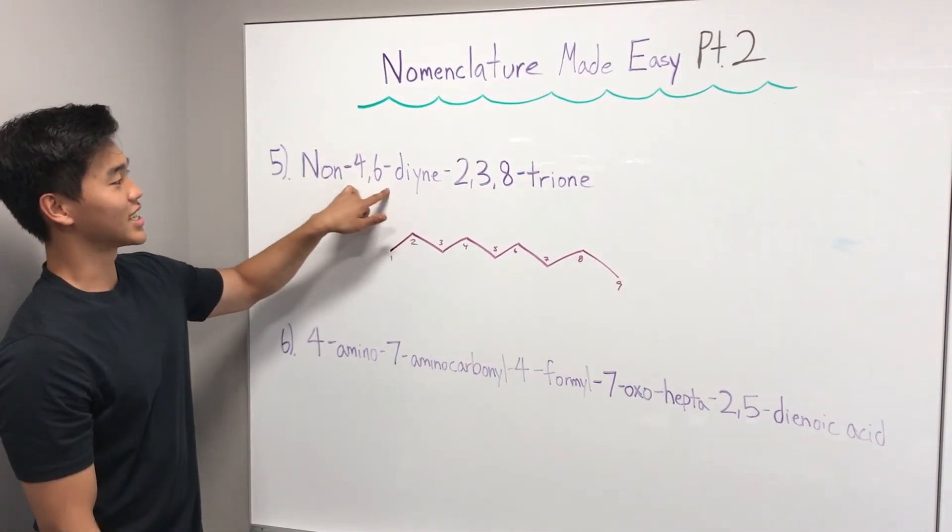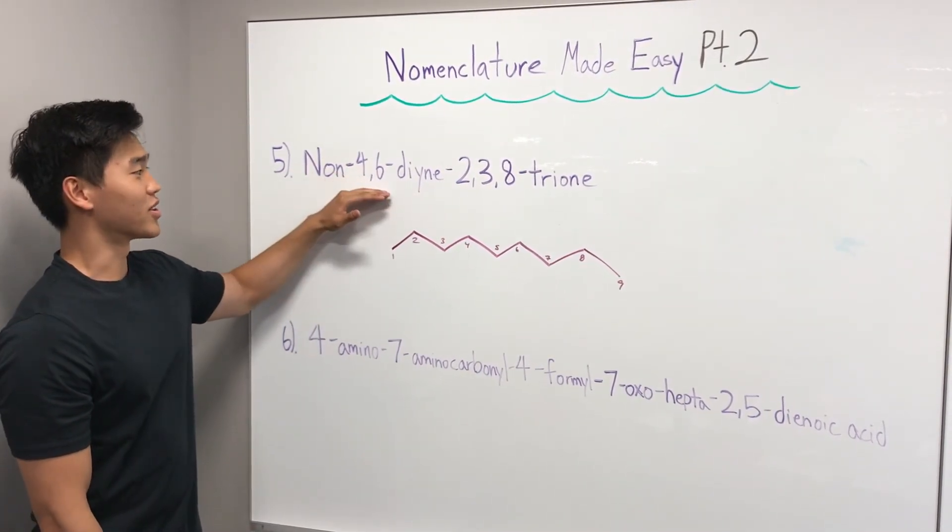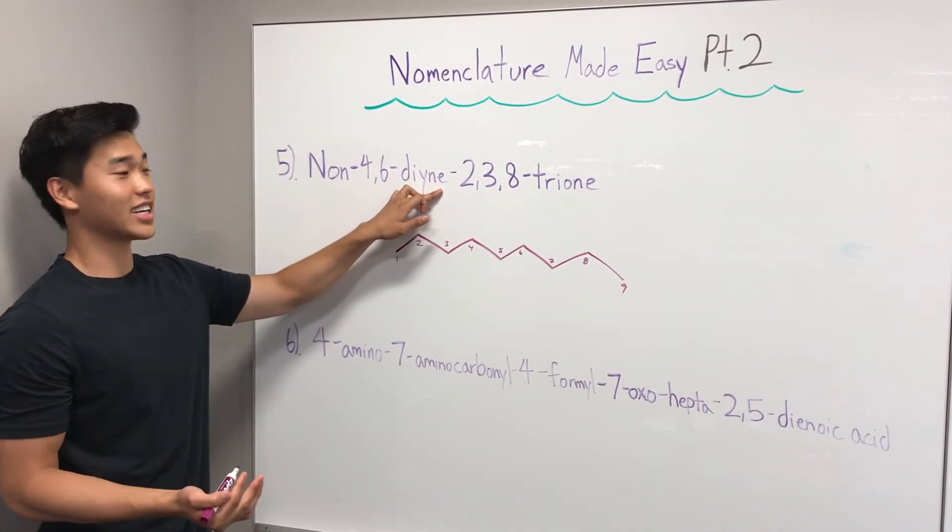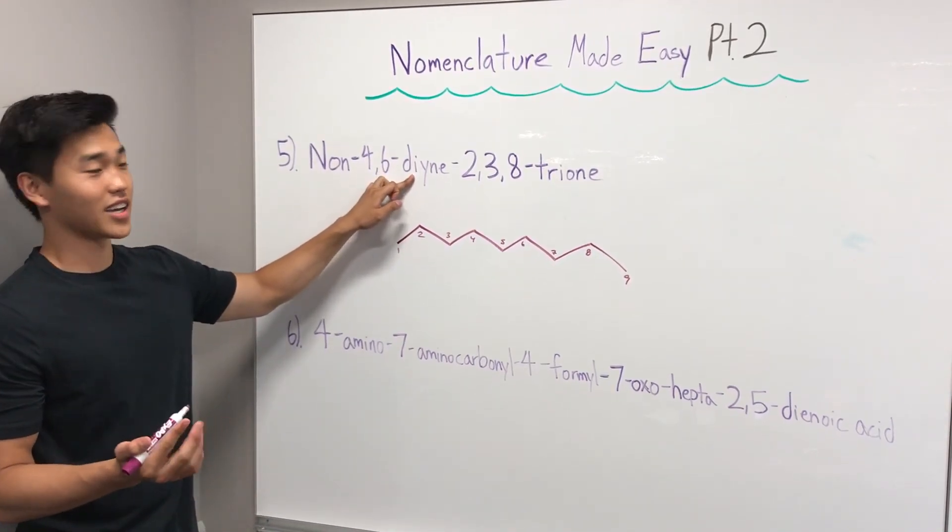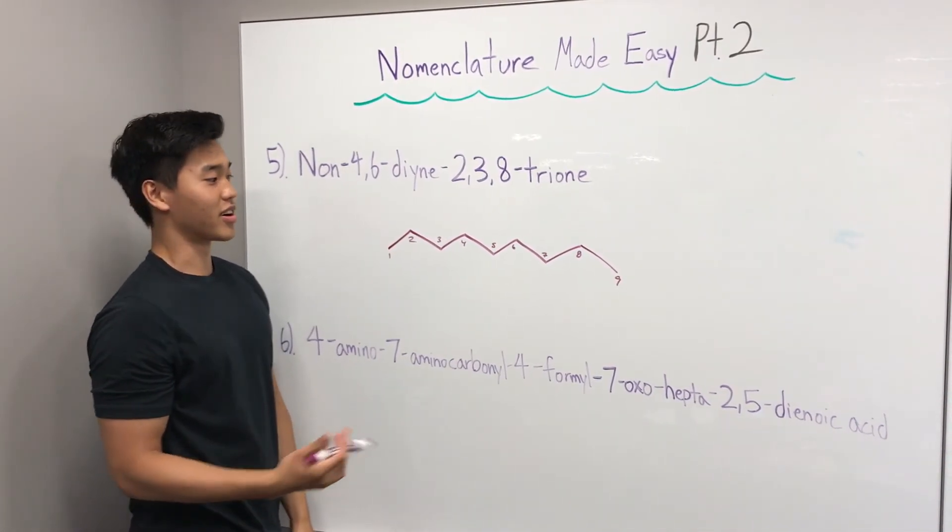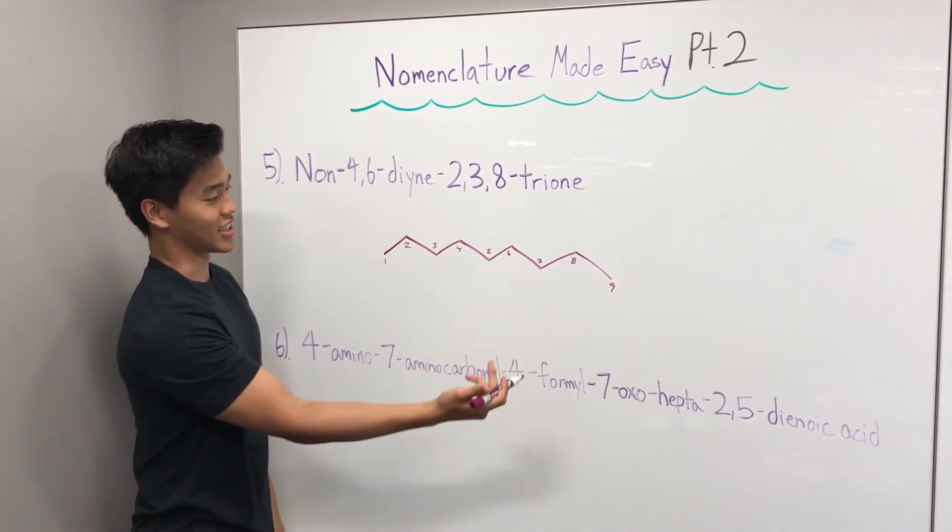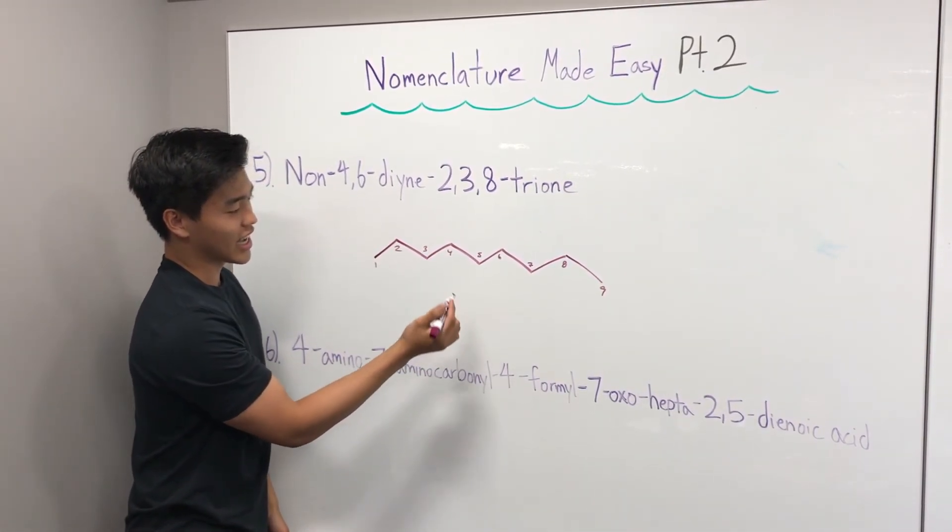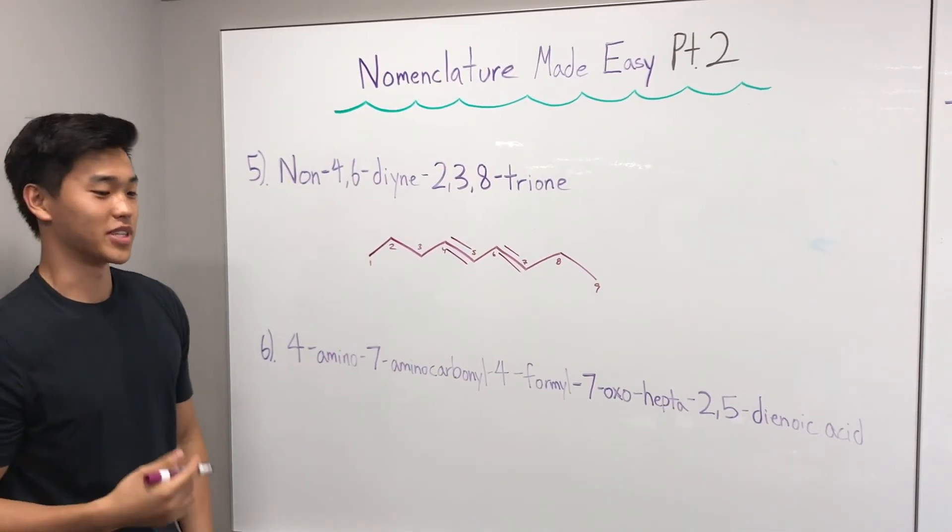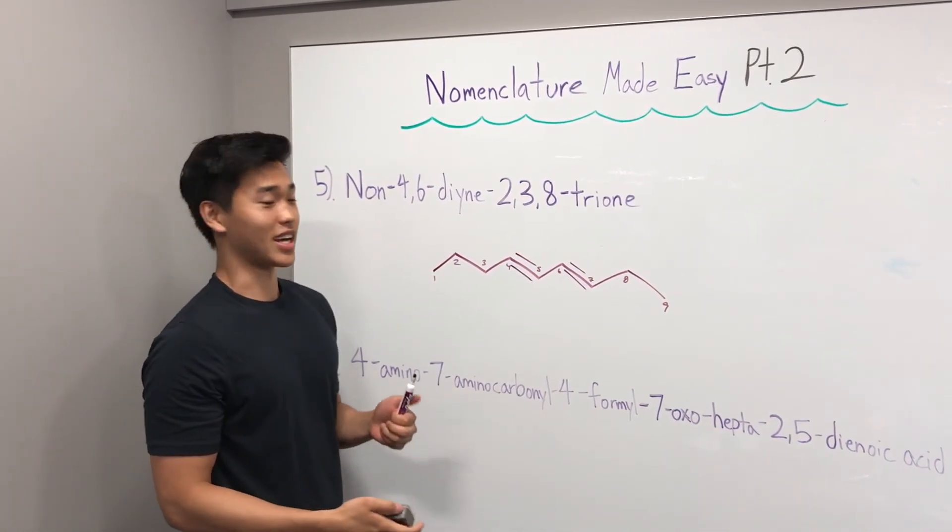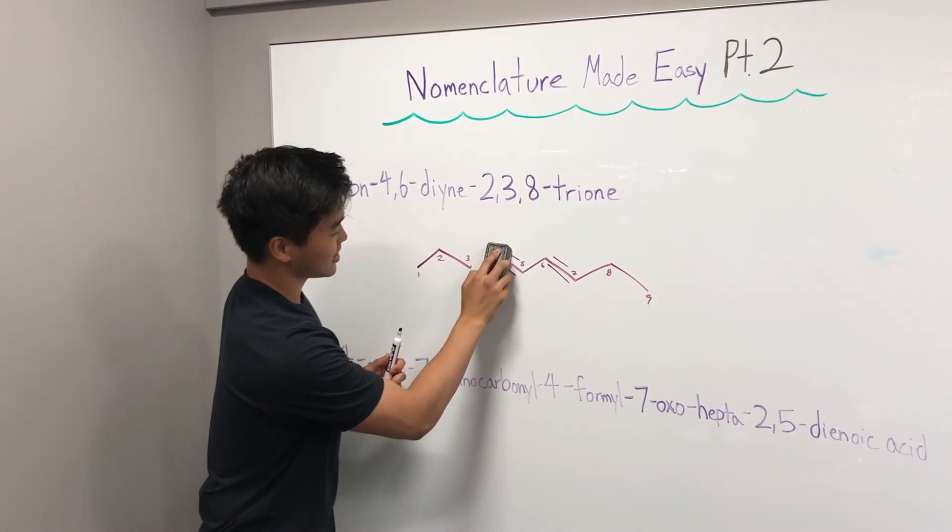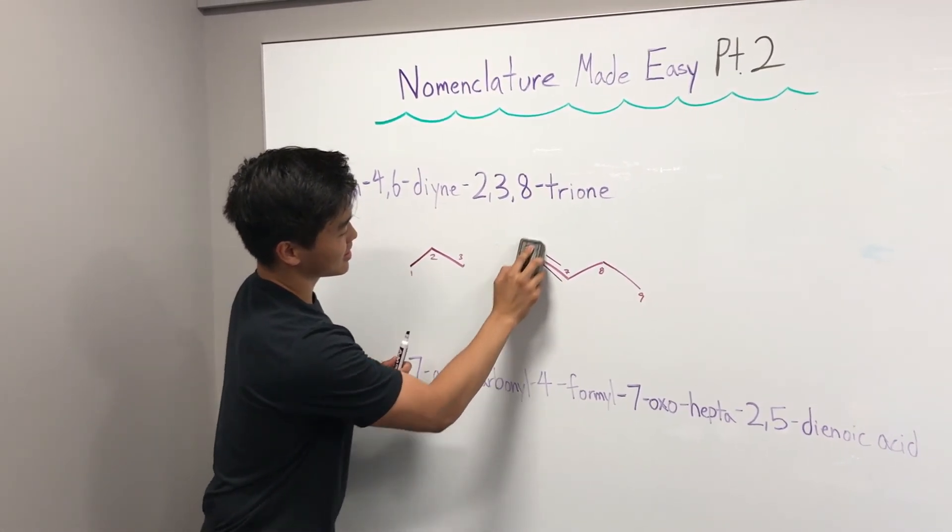From left to right, we're going to go 4,6-diene. Carbon four and six are going to have a triple bond. Yne for the alkyne, and there's going to be two of them, so di. Whenever you see four and six, the triple bond is going to be starting at four and going to five and starting at six and going to seven.